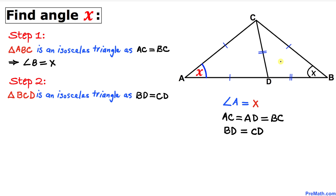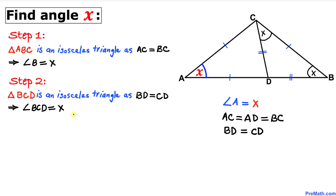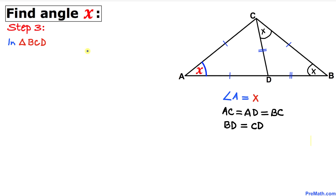Let's focus on the smaller triangle BCD on the right-hand side. We can see that triangle BCD is an isosceles triangle since side BD equals side CD. So therefore if angle B is X, this angle BCD turns out to be equal to X as well.